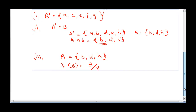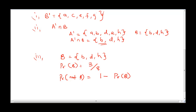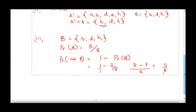To find the probability that it is not an element of B, the probability of not B equals 1 minus the probability of B. Since the probability of B equals 3 over 8, the probability of not B is 1 minus 3 over 8. Taking the LCM, this gives us 8 over 8 minus 3 over 8, which equals 8 minus 3 over 8, giving us 5 over 8.